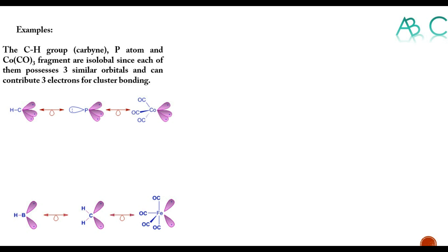Here we can see all three of them have three similar orbitals and also have three electrons. Isolobal species are represented by using the symbol as shown - a double-headed arrow with a lobe.